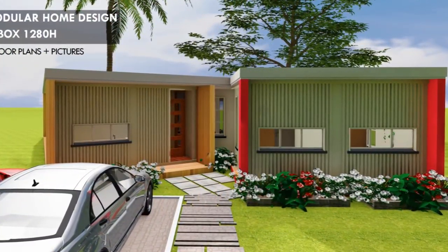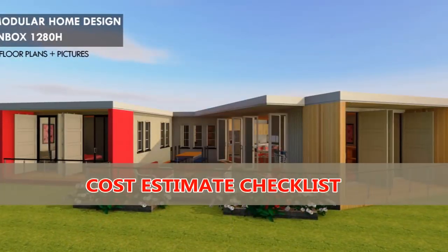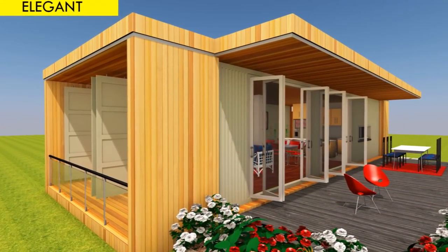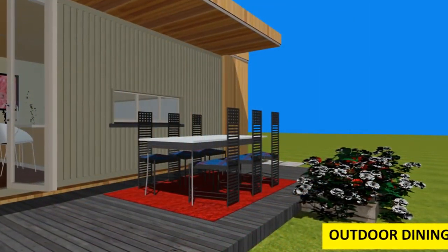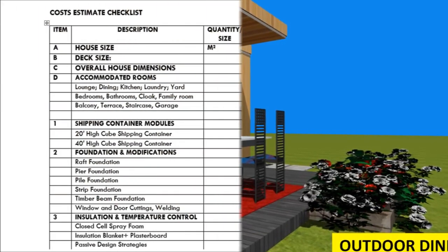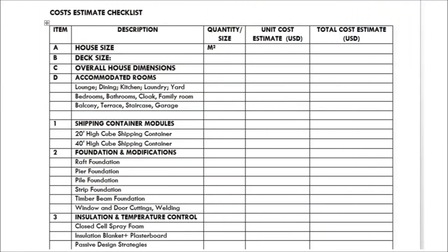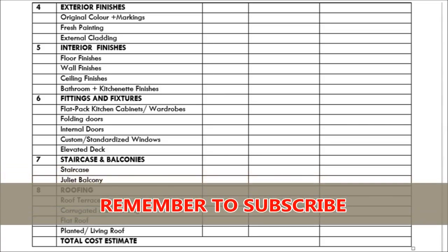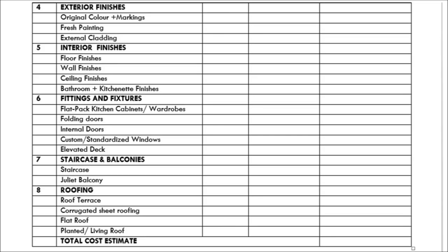The cost estimate checklist: the Inbox 1280H comes with a cost estimate checklist — an itemized list to guide you on the things to consider when planning your own shipping container project. The design inclusions in this list are: the house size, the deck size, the overall house dimensions, the accommodation list, the number of shipping container modules used, the type of foundation and modifications, insulation and temperature control strategies, exterior finishes, interior finishes, fittings and fixtures, a staircase and any balconies if present, and last but not least, the roofing type to use.